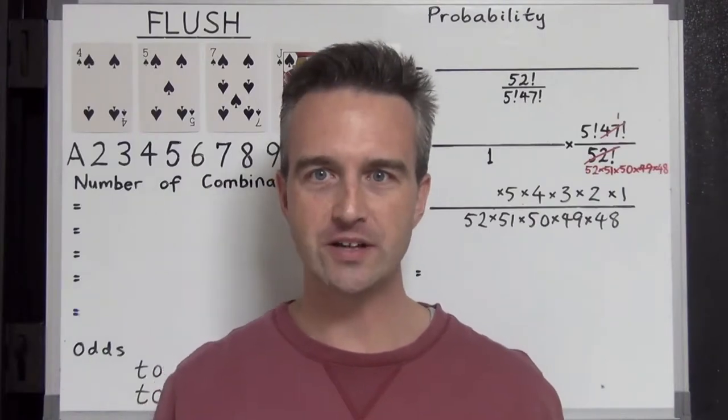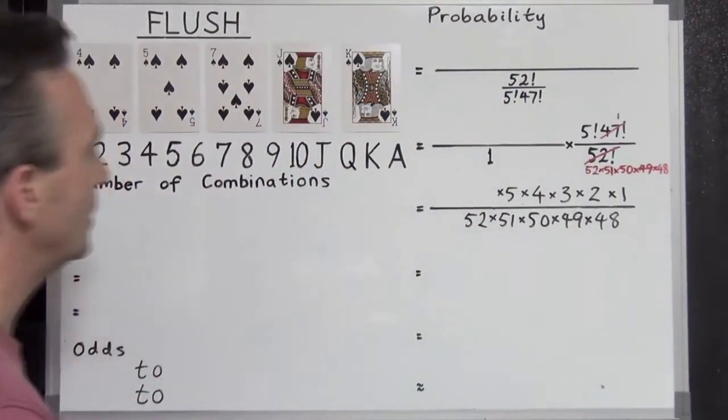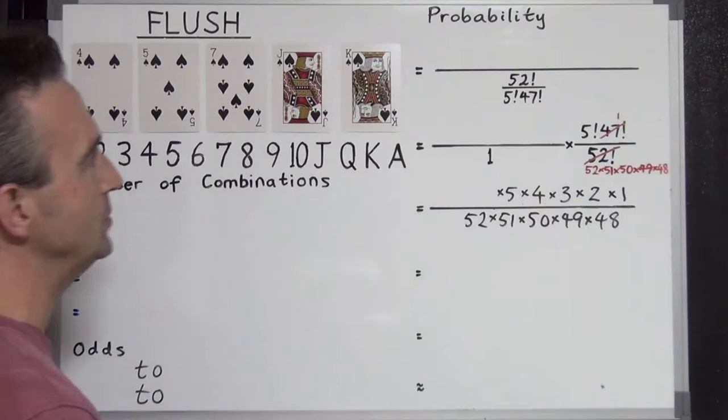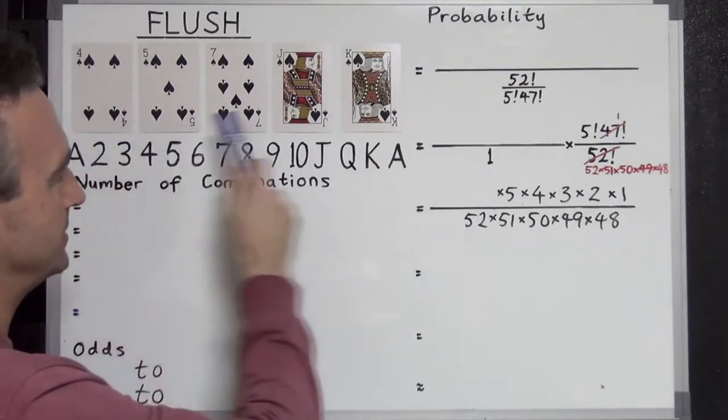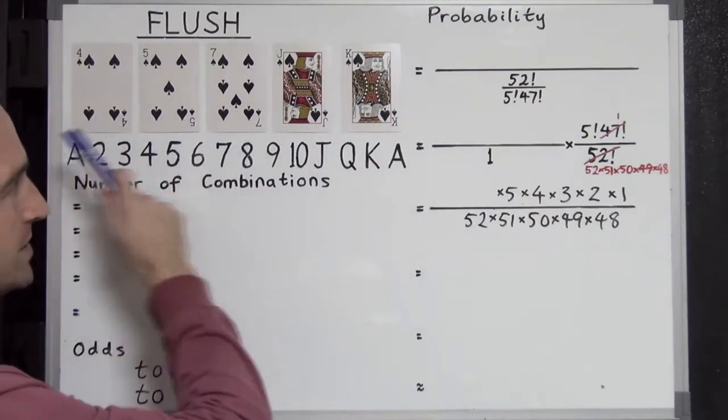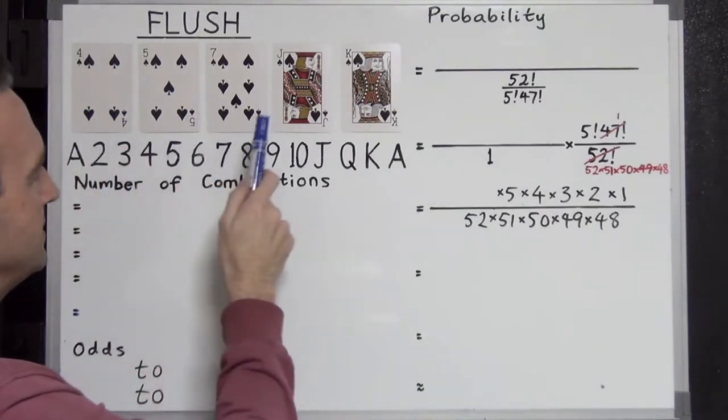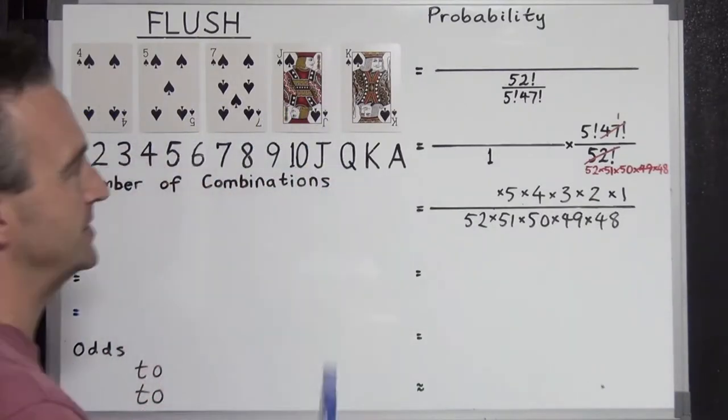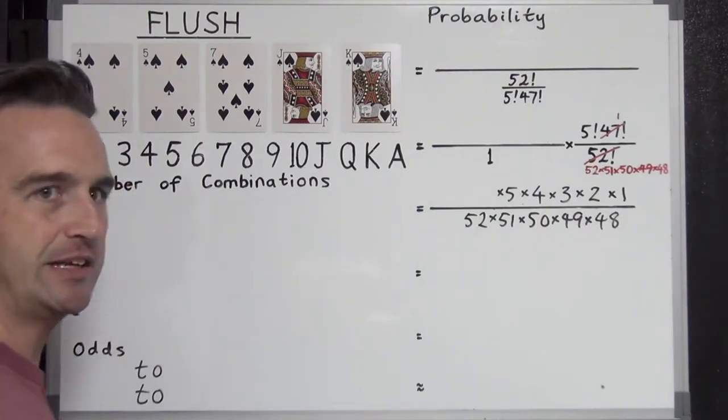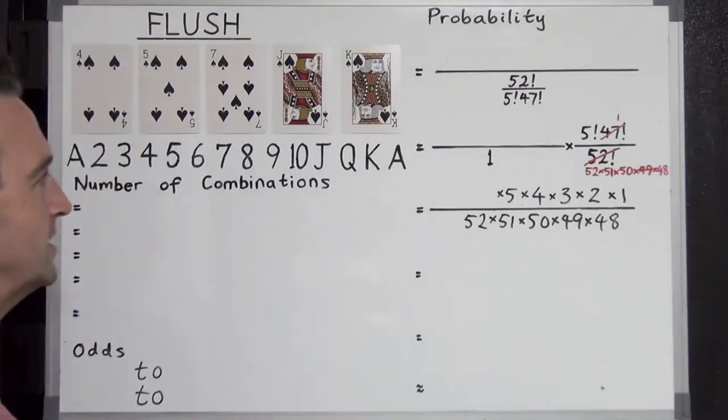So the first thing, what is a flush? A flush is a hand where all the cards are in the same suit but they're not in sequence. Okay, so here you can see we have all spades but the ranks are not in sequence. They're not 4, 5, 6, 7, 8. They're all sort of mixed up and all over the place and there's not a consecutive order. So let's see how many flushes are possible.